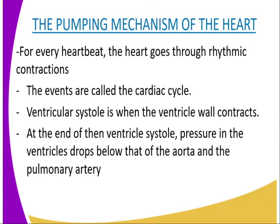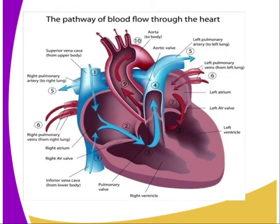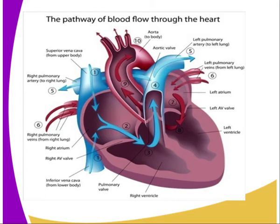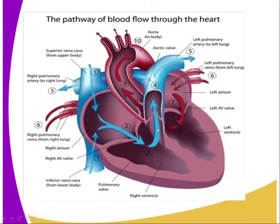The pulse corresponds to the arteries and can be felt when large arteries near the skin are placed near a bone — for example, at the wrist. The diagram on our screen shows the pathway of blood flow through the arteries — from the lungs to the heart, to the auricles, to the ventricles, back to the left auricle, and outside to the lungs. The numbering represents how blood flows from the lungs through the heart and back again.